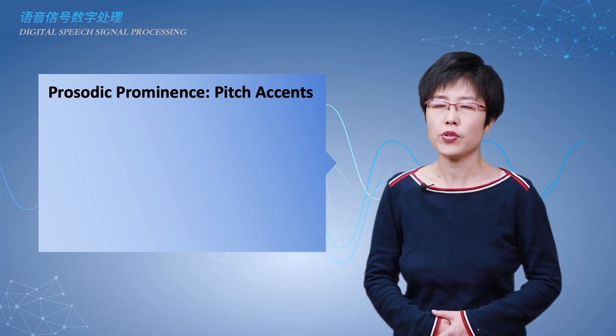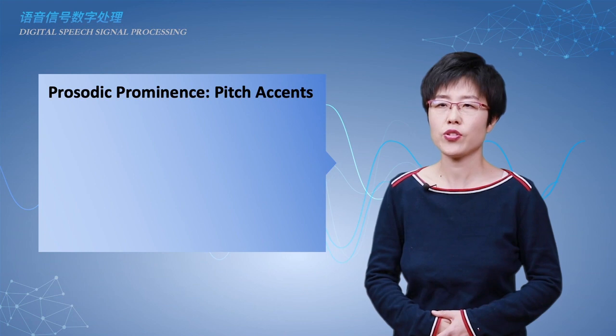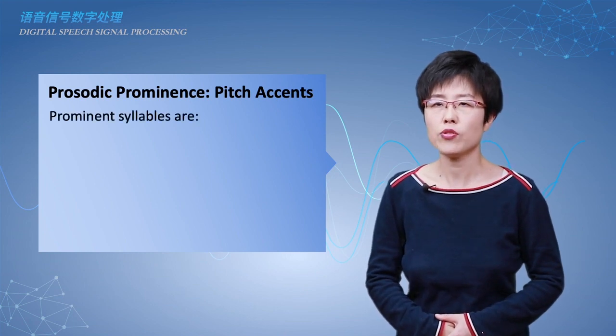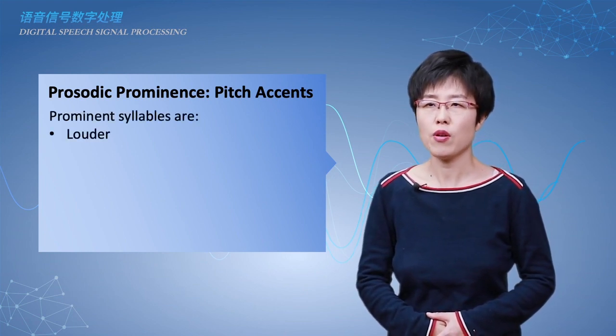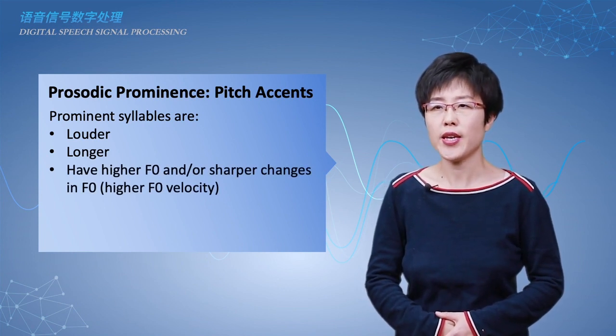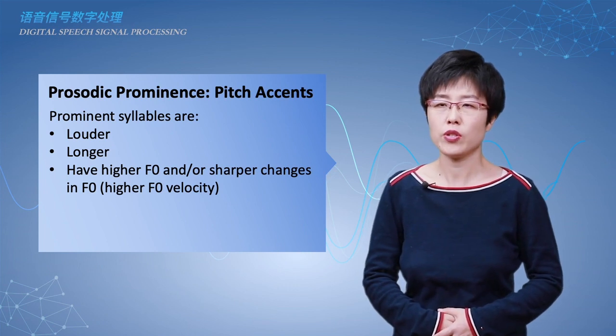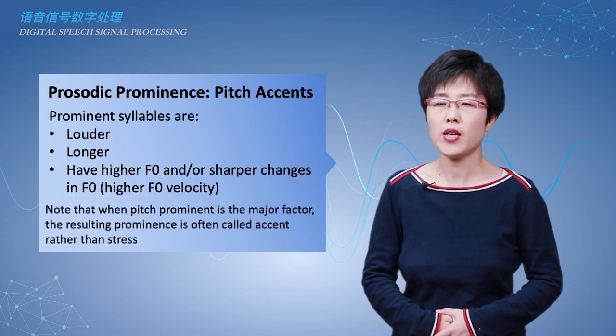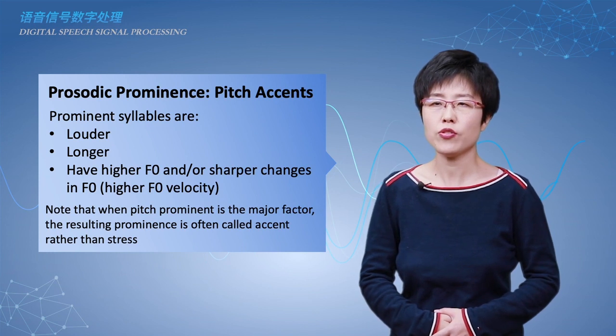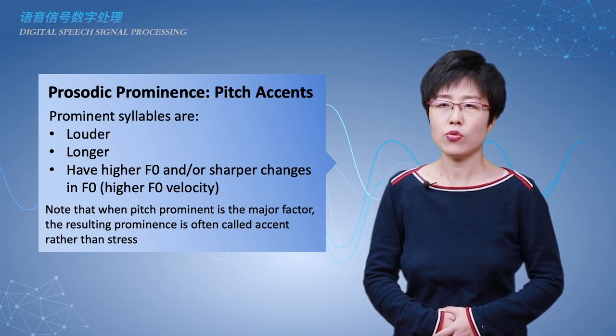Prosodic prominence is typically associated with speech accents. Prominent syllables are louder, longer, and have higher fundamental frequency and/or sharper changes in fundamental frequency. Note that when pitch prominence is the major factor, the resulting prominence is often called accent rather than stress.